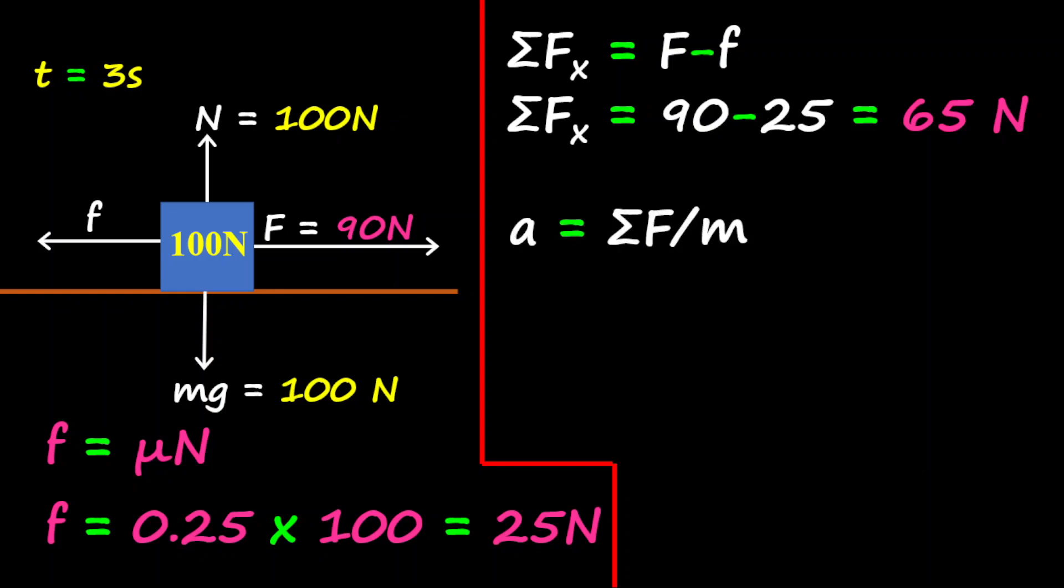The next step is to find our acceleration. The acceleration is equal to the total force in the X divided by the mass. Where this comes from is the formula force equals mass times acceleration.